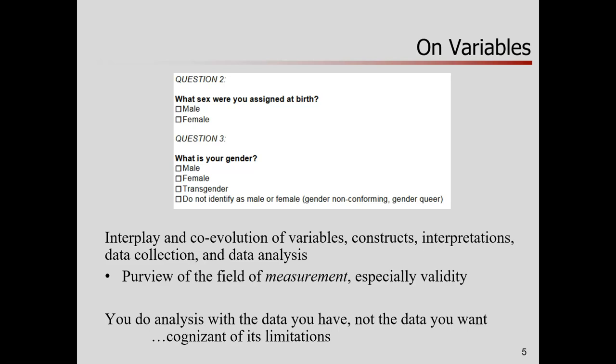Here are other options. Another kind of survey: What sex were you assigned at birth? Only two options. What is your gender? A few options, as well as do not identify as male or female in different ways. This happens all the time, that we have a co-evolution of variables, that there's things in our data sets, constructs, the ideas we'd like to think about, interpretations, data collection, data analysis.